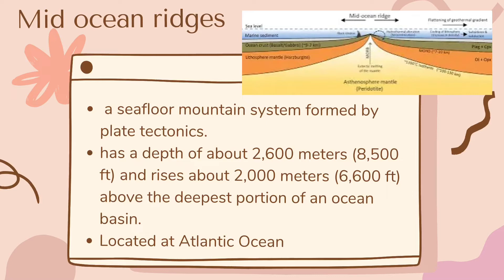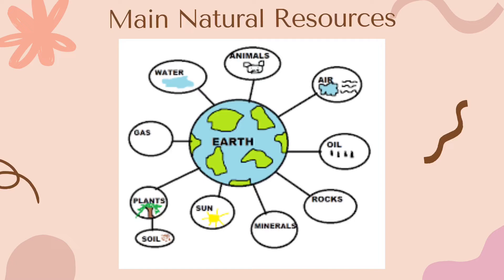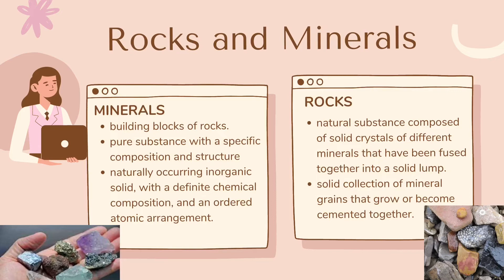The main natural resources include oil, coal, natural gas, metals, stone, and sand. Other natural resources are air, sunlight, soil, and water. Animals, birds, fish, and plants are natural resources as well, because natural resources are used to make food, fuel, and raw materials for the production of goods.